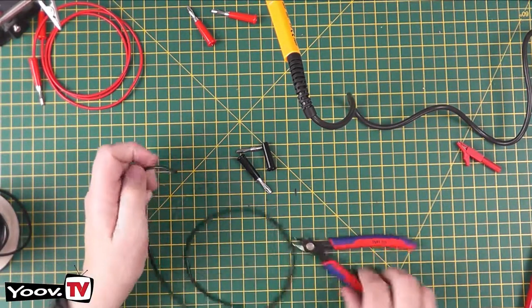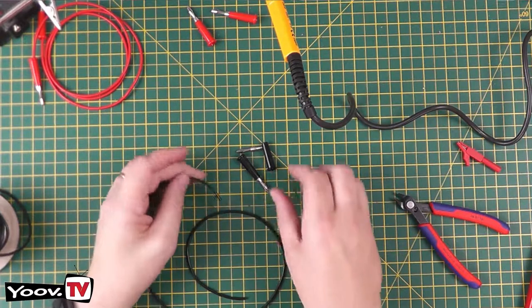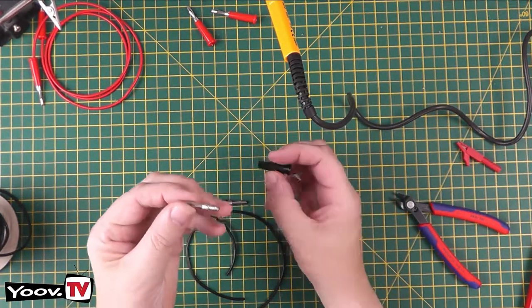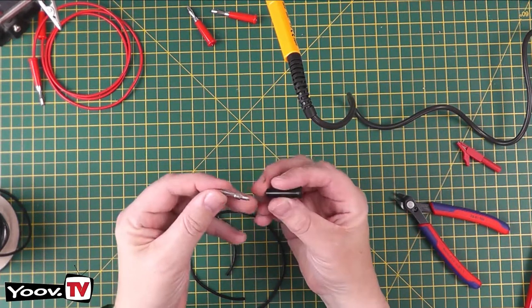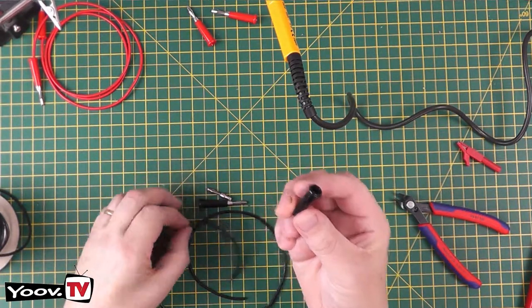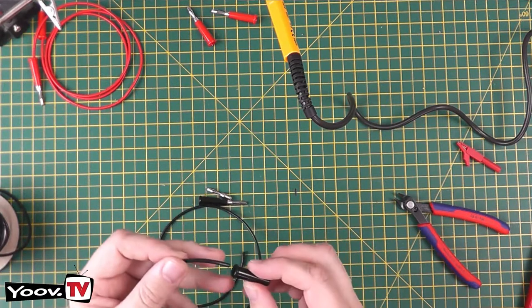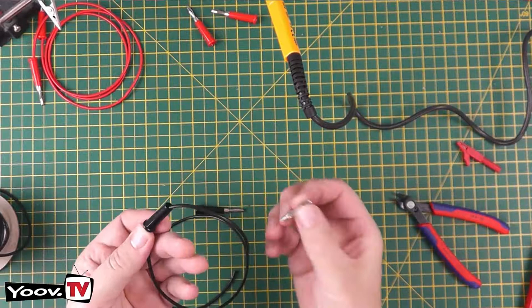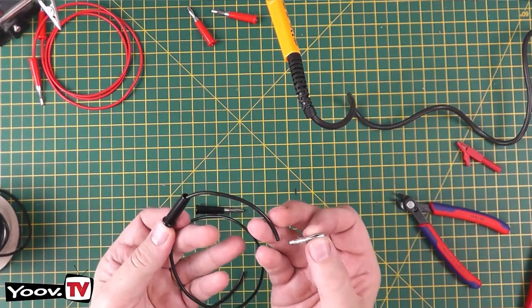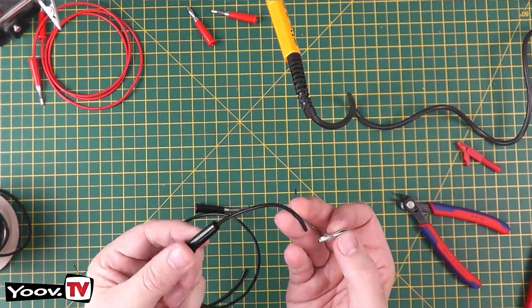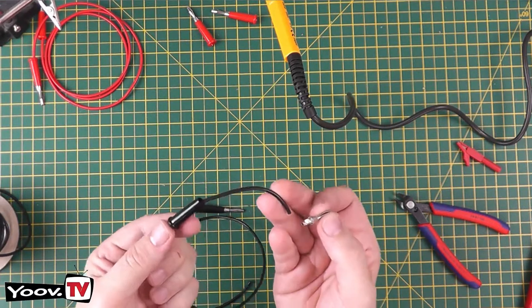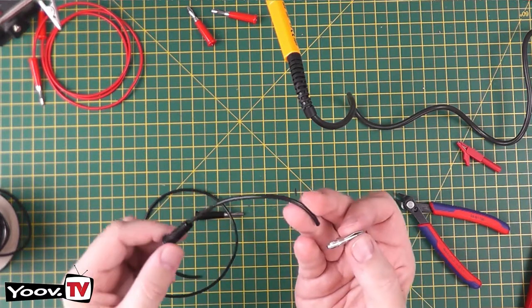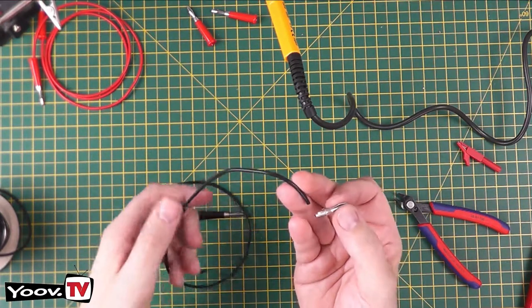Now here's an important tip. As I've said these plugs come in two parts the metal plug itself and the plastic shroud. So it's important you put the plastic shroud on the cable before you start attaching it. A number of times I've very neatly soldered on the plug and then realized afterwards I haven't put the plastic shroud on and I've had to desolder the wire and start again. So make sure you put the plastic cover on before you attach the wire to the plug.